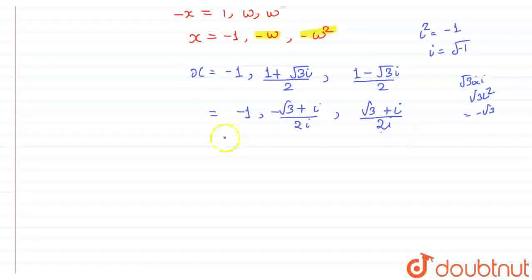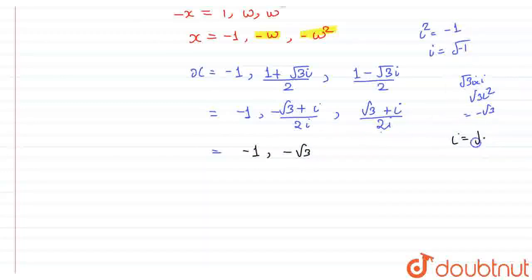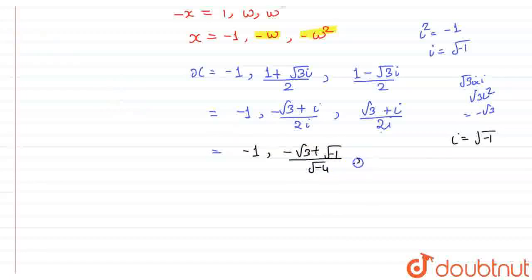So, if I solve this, I can write this one as minus 1, this one is minus root 3, and the value of iota is under root of minus 1, so I can write plus under root of minus 1 upon twice into under root of minus 1, which is under root of minus 4. And this value would be under root of 3 plus under root of minus 1 upon under root of minus 4. So, these are the three roots we got from our given equation. Thank you.